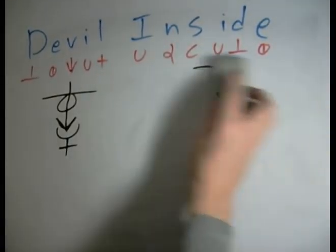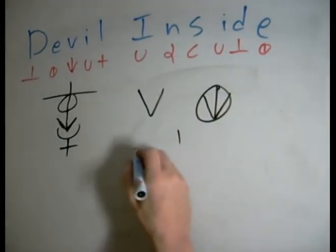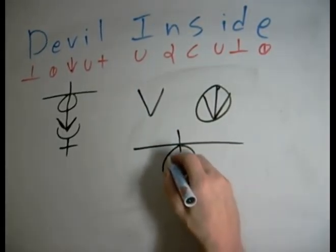We can, we've got the V. We can put it directly inside of the E, like so. So, D, E, V.